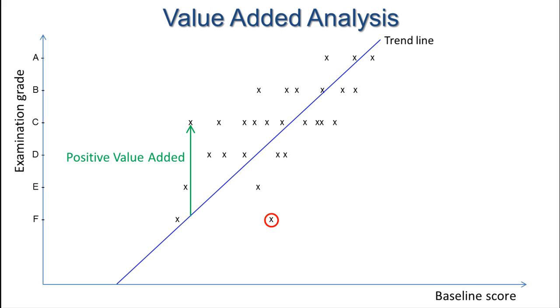Now, let's look at this student. Again, we can drop down to the horizontal axis to see their baseline score, and tracing up to the line and then across gives us their predicted grade, which in this case is between a C and a D. This student has obtained an F grade, which we would describe as negative value added.